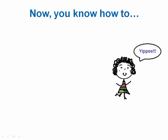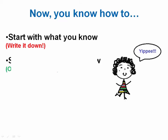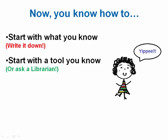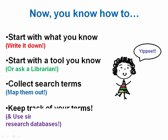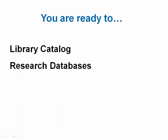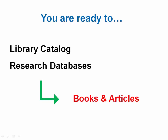So now you have a framework to think about developing search terms as you begin your research process. Start with what you know. Start with a tool that you know. Read and expand upon your search terms list. Keep track of the words you try. Continue to harvest search terms from your reading. Now with your search terms list, you are ready to deepen your knowledge of your topic by using the library catalog or research databases to find other useful sources like books and articles.